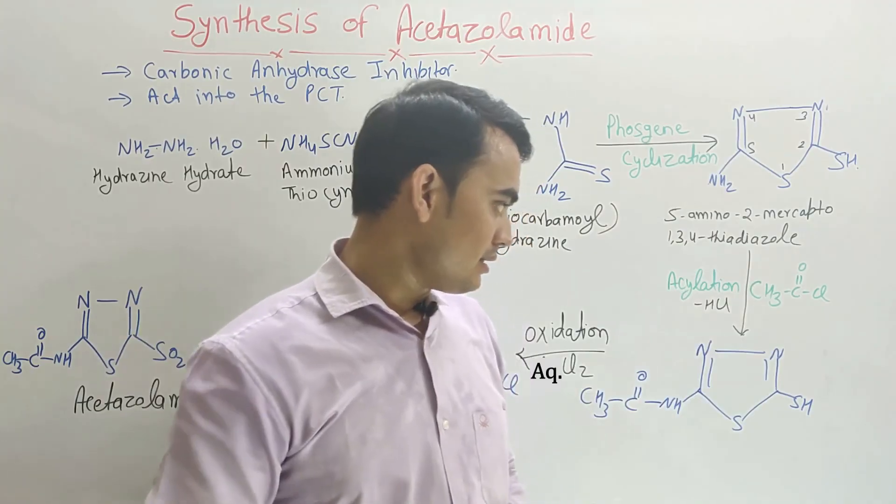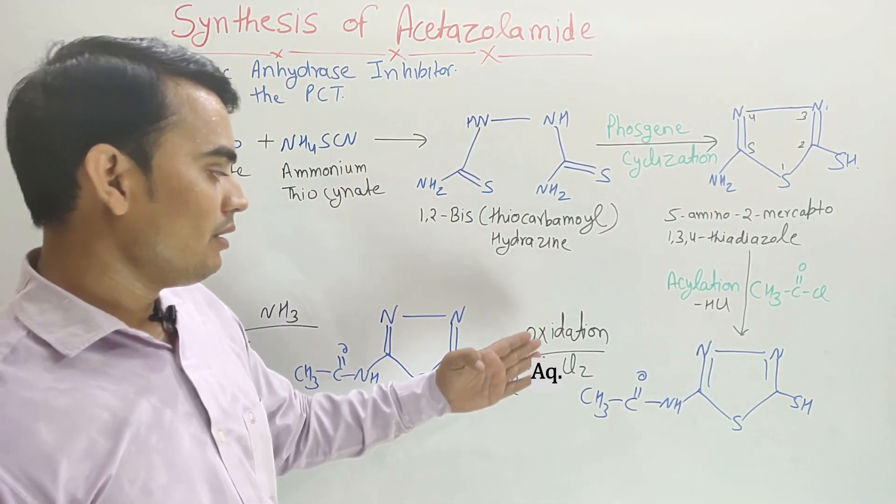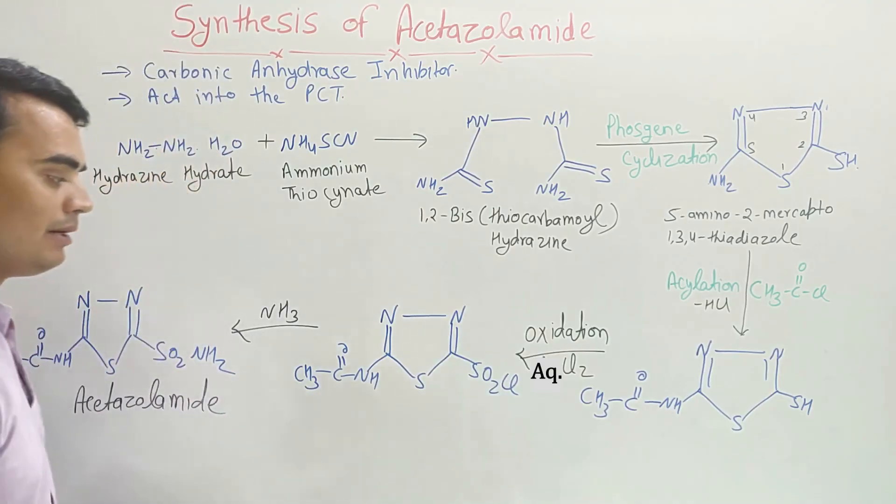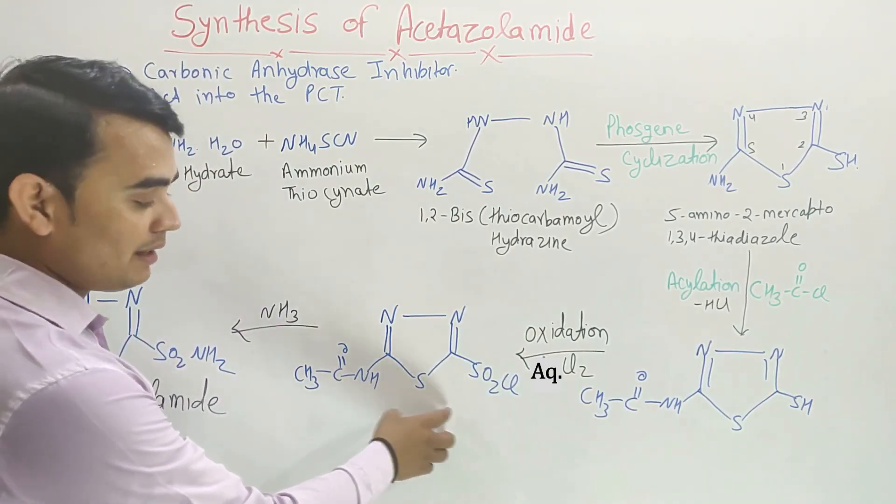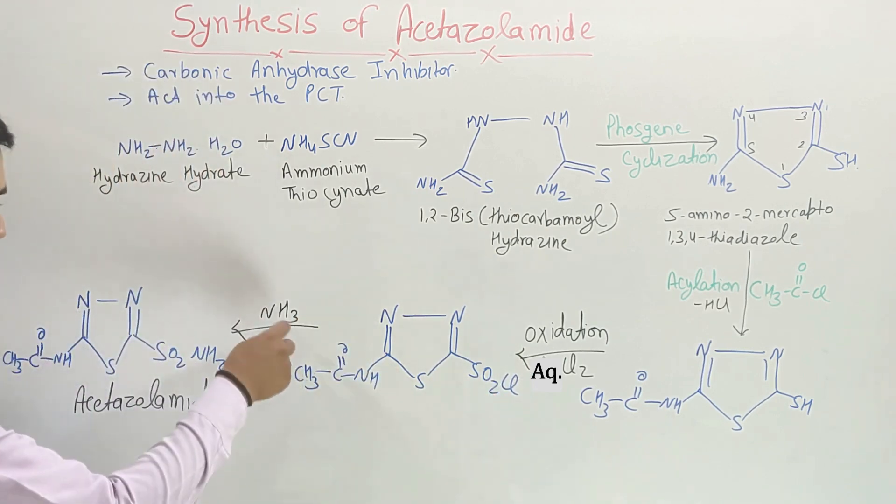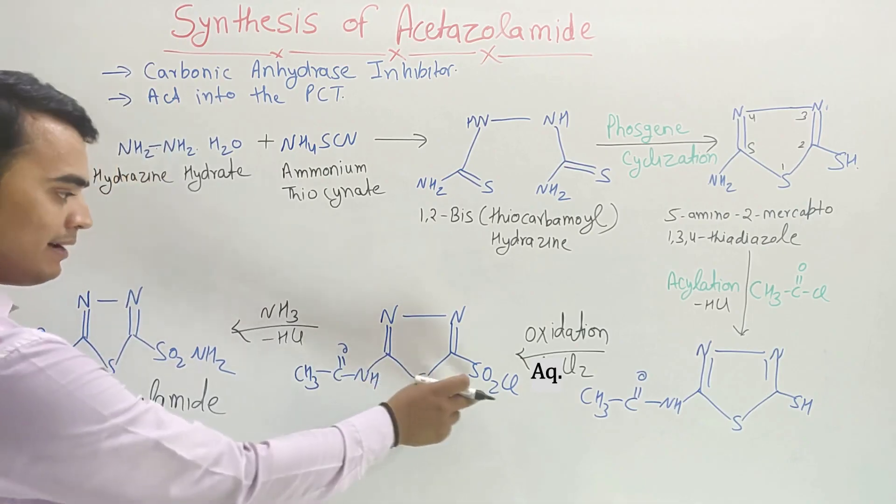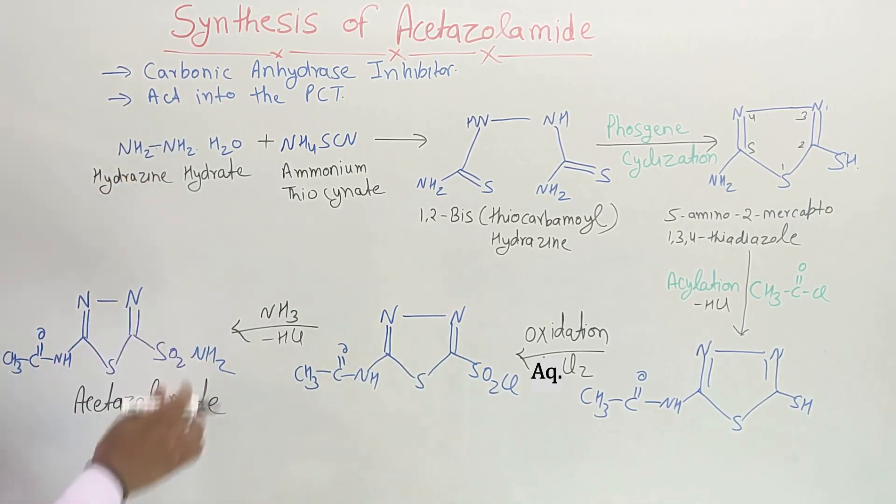When acetylation occurs in the presence of acetyl chloride, then what happened? This intermediate, when oxidation of this intermediate forms, then it forms this intermediate. By the passing of the ammonia, this chloride ion will be removed as HCl, here HCl will be removed, and the amino group will be added on this position, and it becomes the acetazolamide.